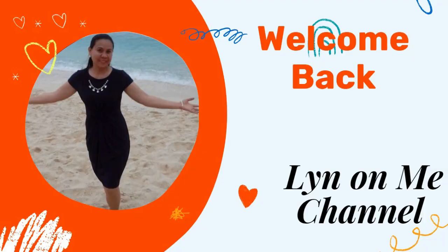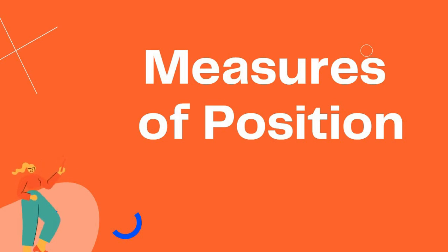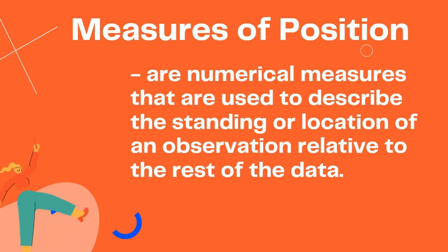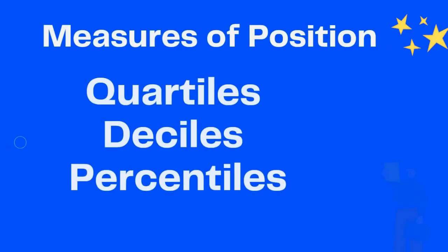Hello everyone, welcome back again to my channel. This time we will be discussing about measures of position. These are numerical measures that are used to describe the standing or location of an observation relative to the rest of the data. There are three common measures of position.